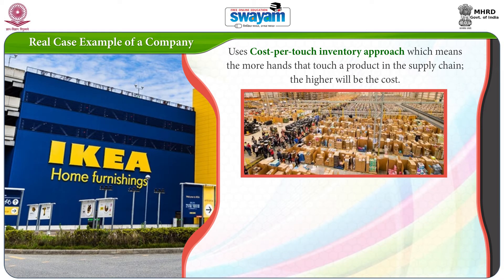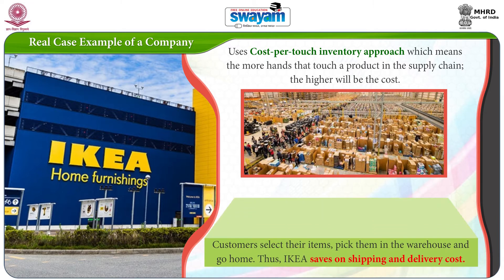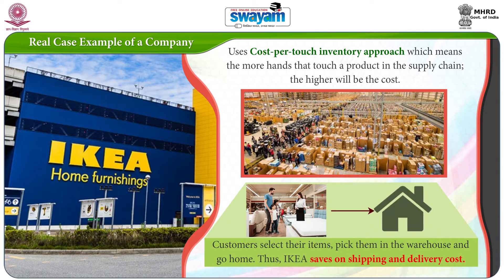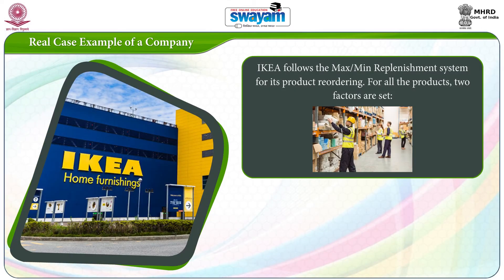IKEA uses a cost-per-touch inventory approach, which means the more hands that touch a product in the supply chain, the higher will be the cost. Customers select their items, pick them in the warehouse and go home. Thus IKEA saves on shipping and delivery cost.